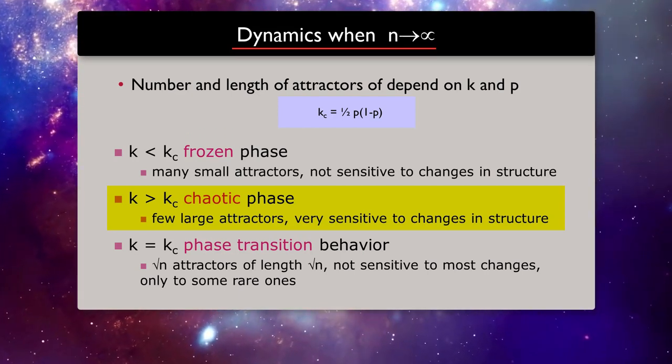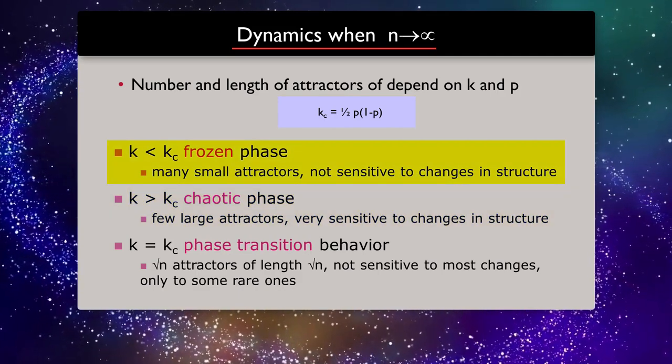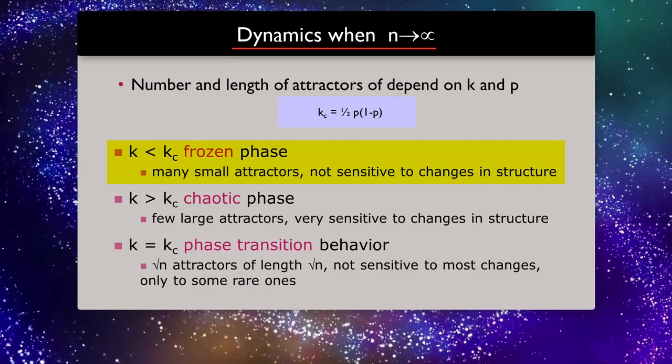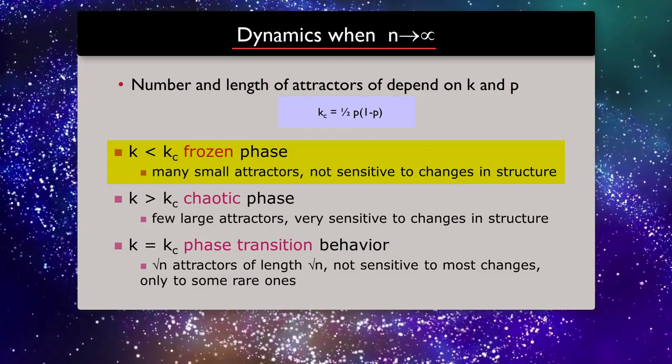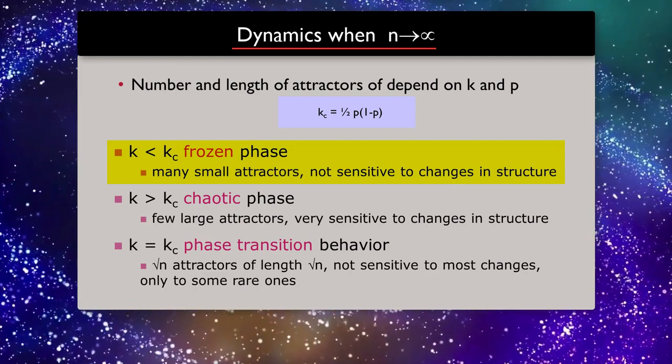If K is small, then we expect frozen or periodic behavior, so some of the bulbs flip on and off, but most soon stop.